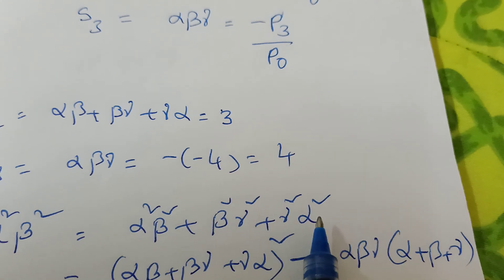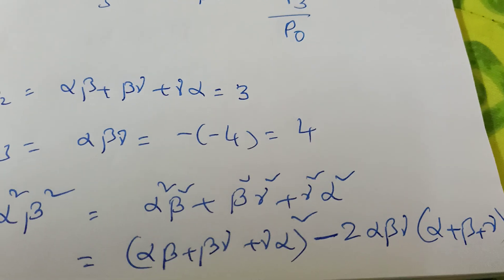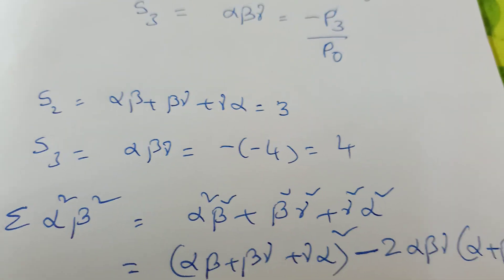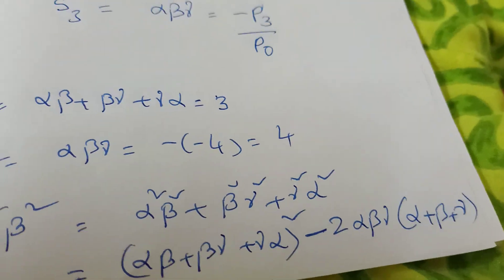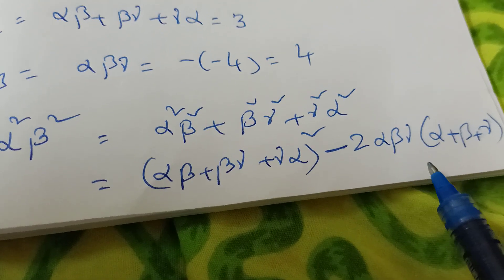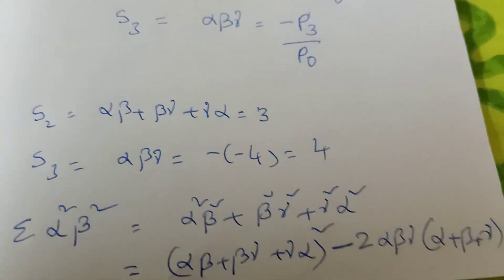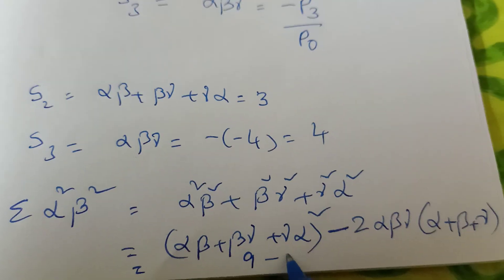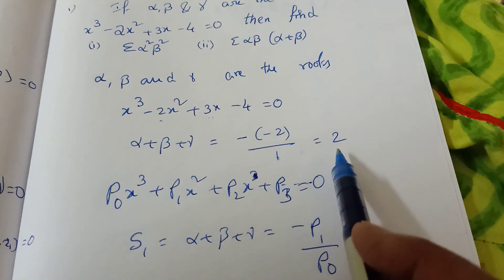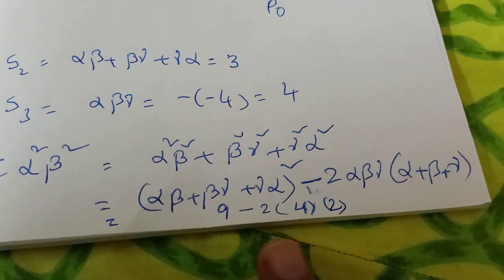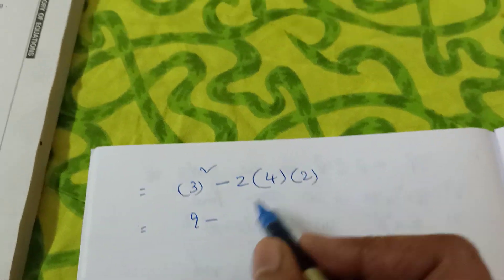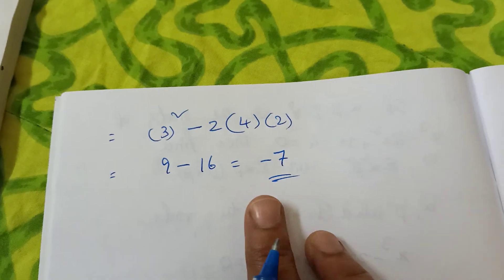So Σα²β² equals (α·β plus β·γ plus γ·α)² minus 2·(α·β·γ)·(α plus β plus γ). That is S2 squared minus 2·S3·S1. Here S2 is 3 — so 3 squared is 9 — minus 2 into Alpha·Beta·Gamma which is 4, into Alpha plus Beta plus Gamma which is 2. So 9 minus 2 times 4 times 2: that is 9 minus 16, equals minus 7. This is the answer — Σα²β² equals minus 7.